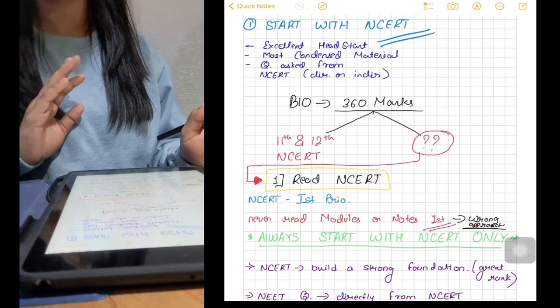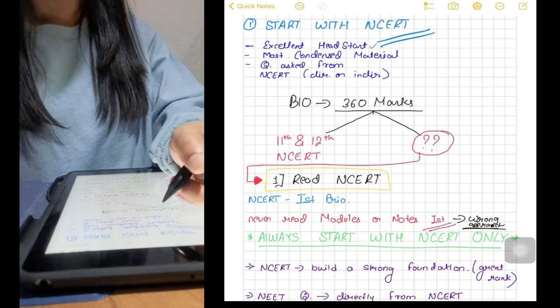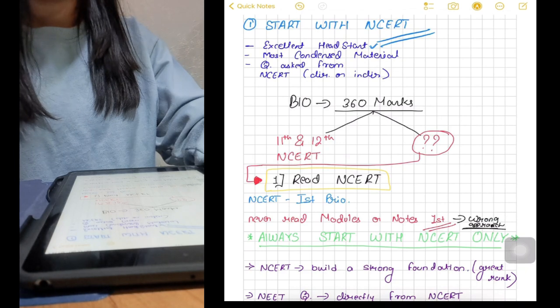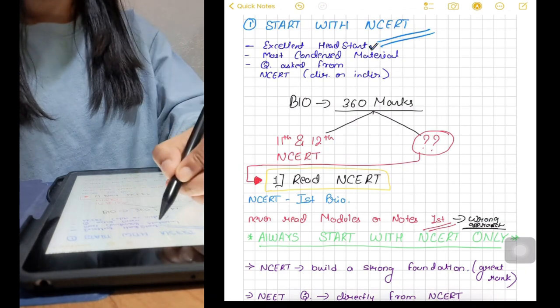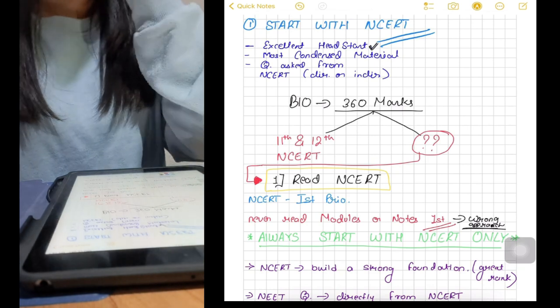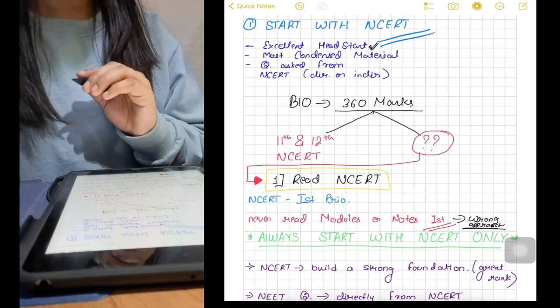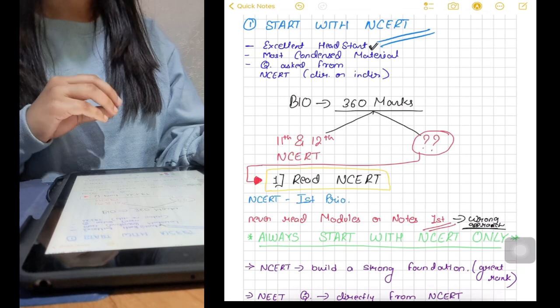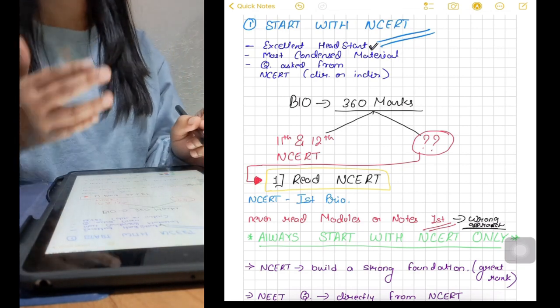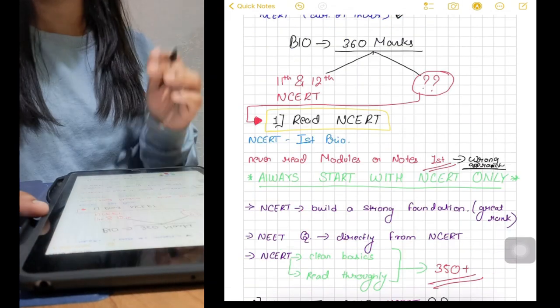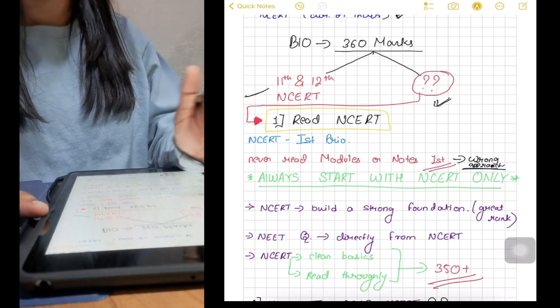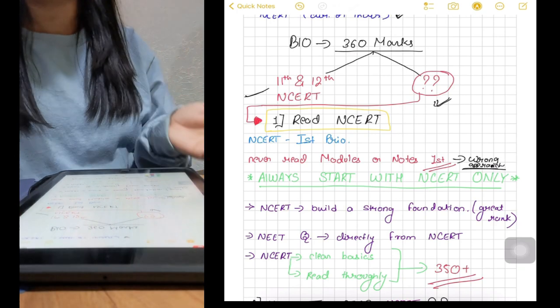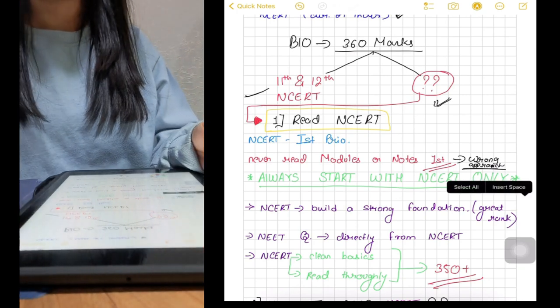So firstly I will start with the NCRT. Why? Because NCRT gives an excellent head start and it has the most condensed material. Plus we all know almost all the questions in NEET are directly from the NCRT. NEET biology paper is of 360 marks and half of the exam is just from the two books that is 11th and 12th NCRT book. So it's like you already know half of the paper.